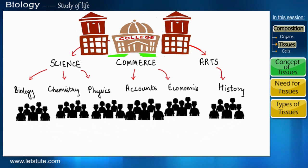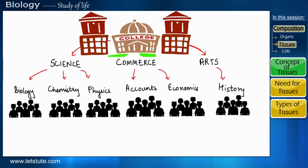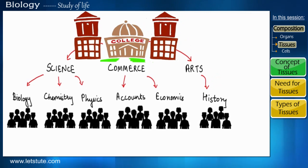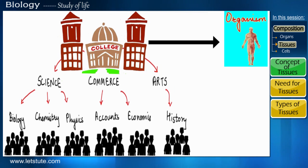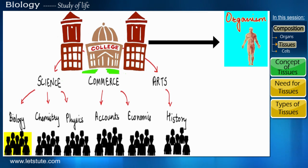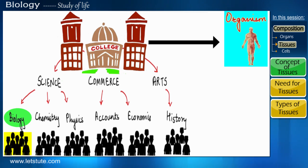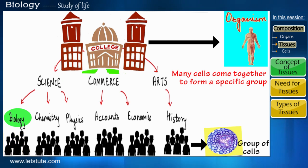Similarly, a college as a complete institution can be compared to a living organism. Just as many students come together to form a class of biology, in the same way many different cells come together to form a specific group called a tissue.